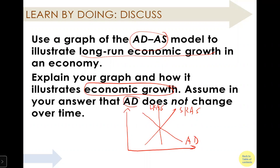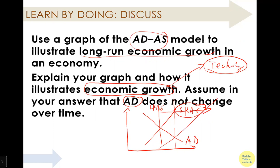They assume AD doesn't change over time. Long-run economic growth is typically caused by technology change. Because of better technology, this is going to shift to the right side. Short-run aggregate supply is going to shift to the right. Because of long-run economic growth, you have higher Y but lower P — price decline and output increase.